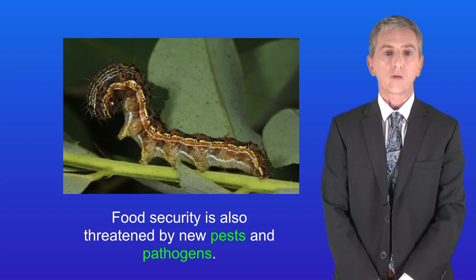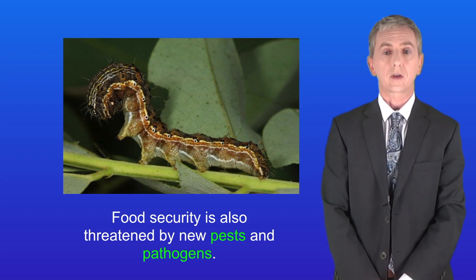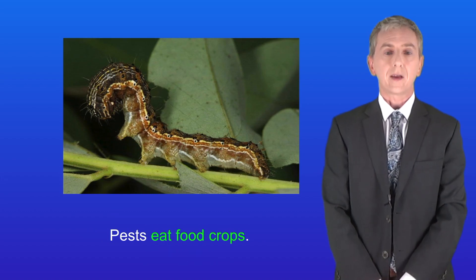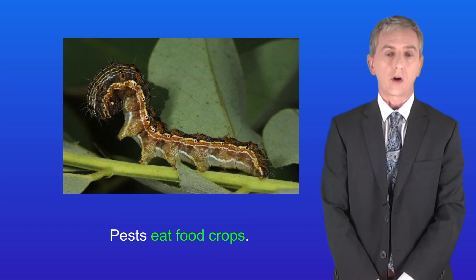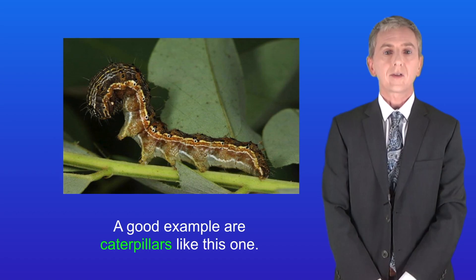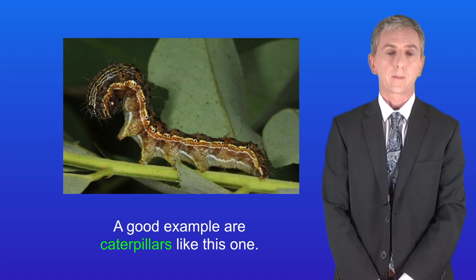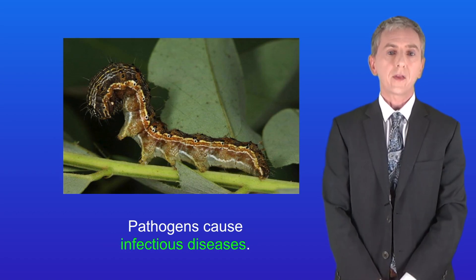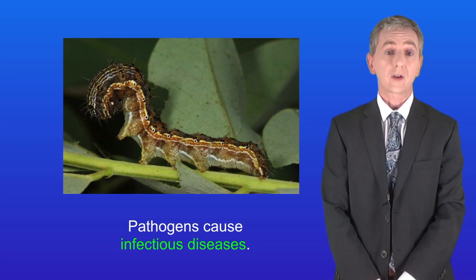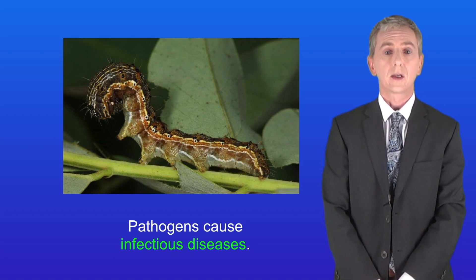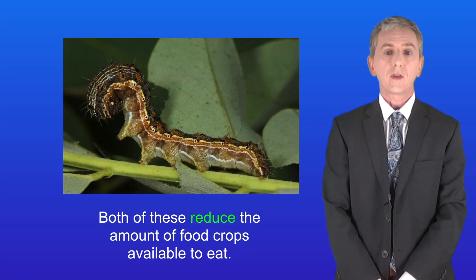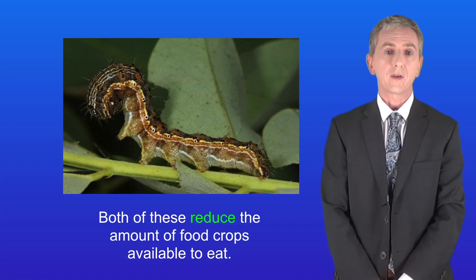Food security is also threatened by new pests and pathogens. Pests eat food crops — a good example are caterpillars like this one. Pathogens cause infectious diseases, and both of these reduce the amount of food crops available to eat.